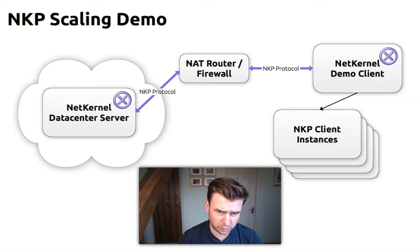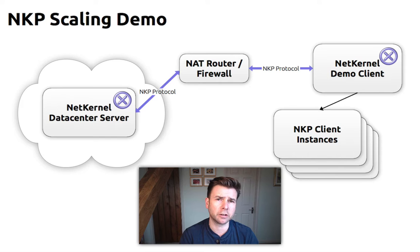This is a good example for utility companies where there's going to be a large number of outside connections on home hubs connecting up wanting to have a permanent connection to the data center, and we want to show how we can give real-time bi-directional secure communication between them.